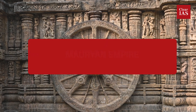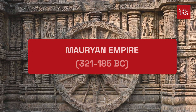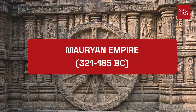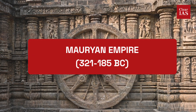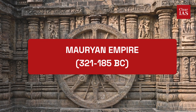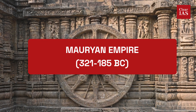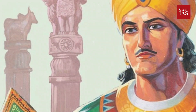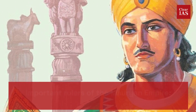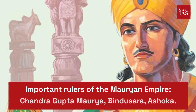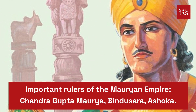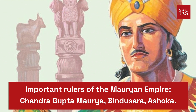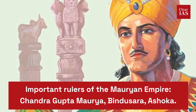After the Iron Age came the Mauryan Empire, starting from 321 BC and lasting up to 185 BC. The important rulers of the Mauryan Empire include Chandragupta Maurya, Bindusara, and Ashoka.